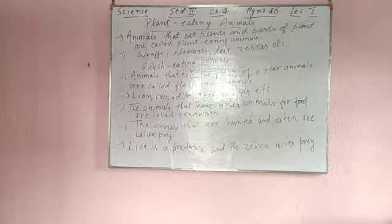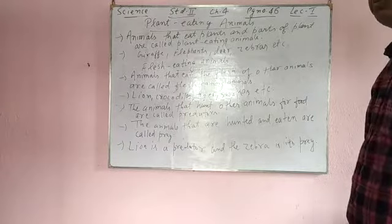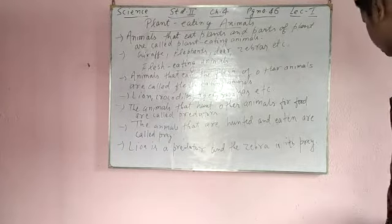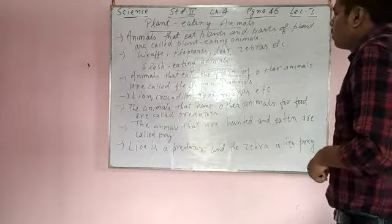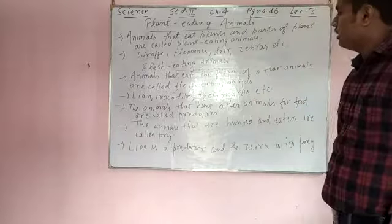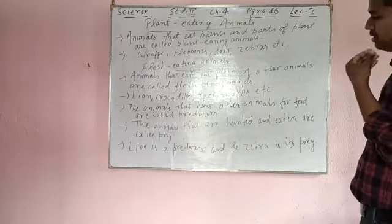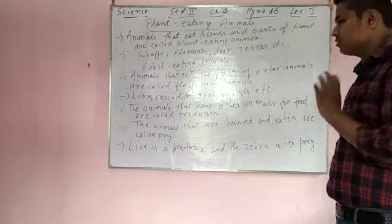So to recap: animals that eat plants and parts of the plant are called plant-eating animals, like giraffe, deer, zebra, etc. Animals that eat the flesh of other animals are called flesh-eating animals — lion, crocodiles, tiger, snakes, etc. The animals that hunt other animals for food are called predators, and the animals that are hunted and eaten are called prey.